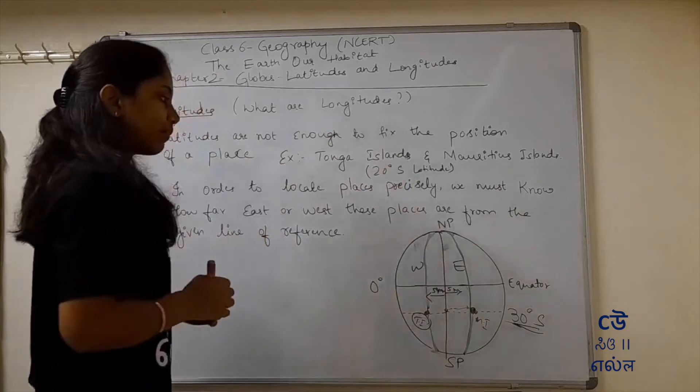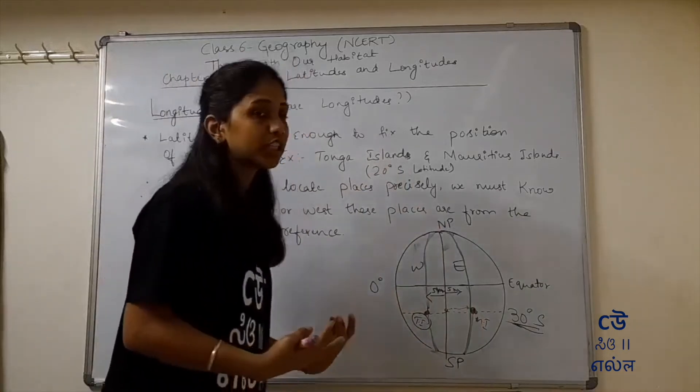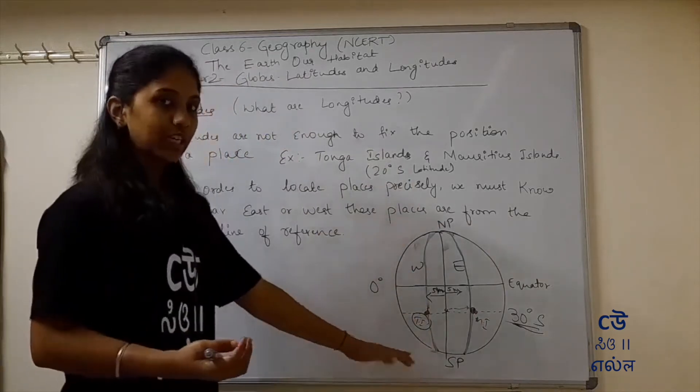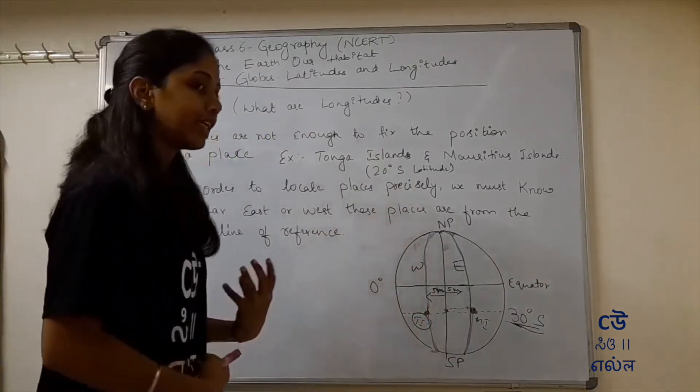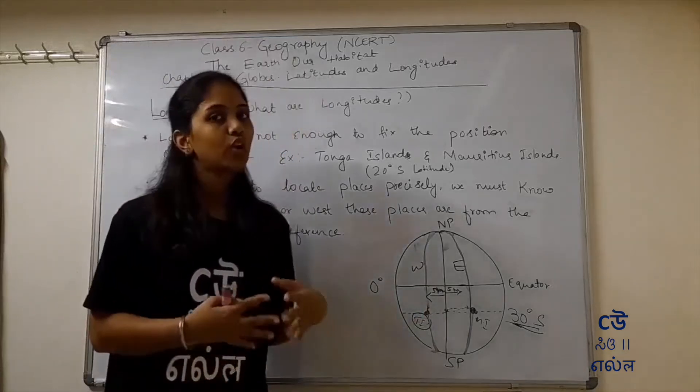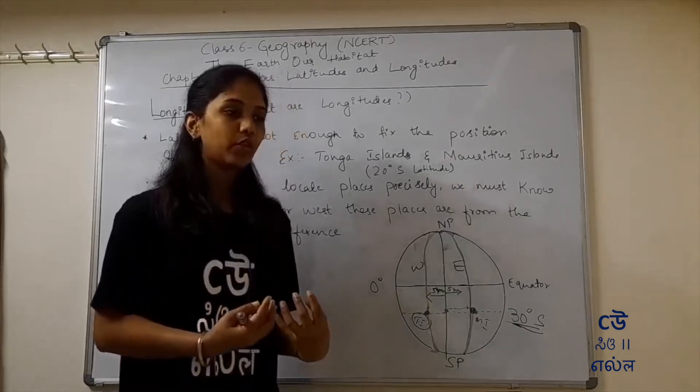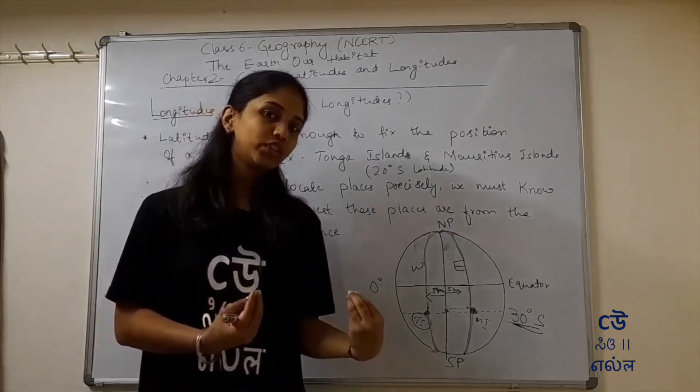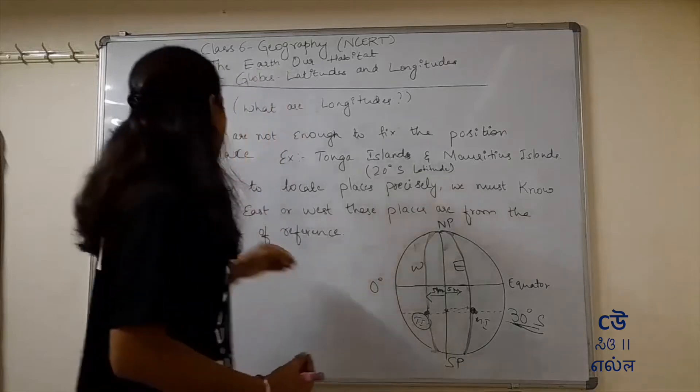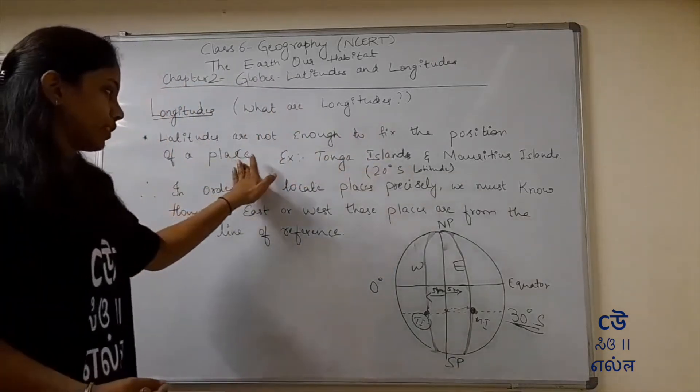So this way, we get the exact, precise location. For that, we need to use longitudes. So you understand this means? Just using latitudes, we cannot get exact location. To get exact location, we need these longitudes. Latitudes are not enough to fix the position of a place.